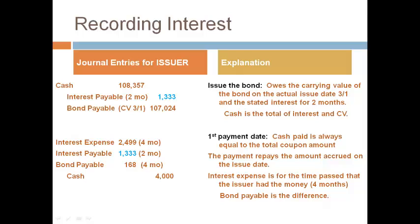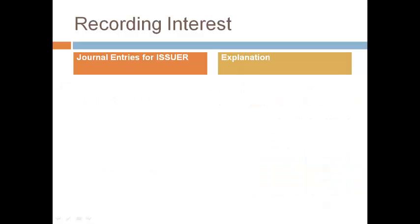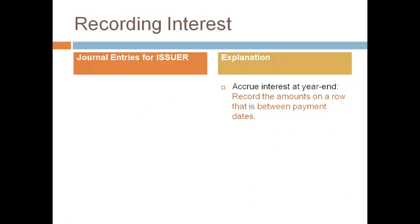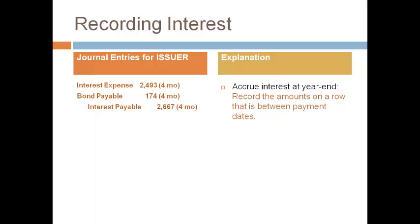The extra line is for the accrued interest from the row that was not on the bond date. The last entry presented is for the year-end accrual — the next row on the table. This entry records the interest expense from the last payment date until year-end. No cash is paid on October 31st because it is not a payment date. This entry records amounts for four months since the last journal entry was made, so the amounts on the row all represent four months. Record the amounts on the amortization table for the October 31st row. When there is no row in between the bond dates, the amounts recorded are the amounts on the row. When there is an extra row inserted between bond date rows, the amounts recorded are the amounts on the bond row less the amounts on the extra row.